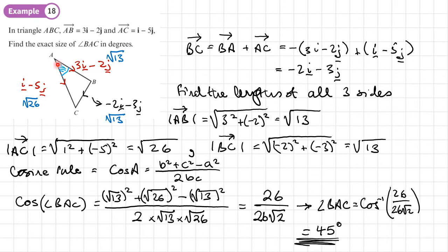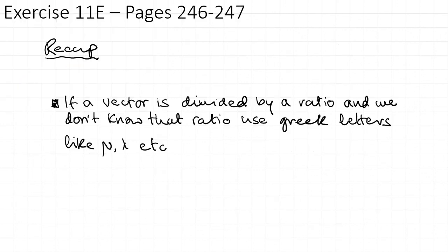Although it doesn't answer the question, we can note the type of triangle. It's an isosceles triangle because AB and BC are both root 13. With angle BAC equal to 45 degrees and the triangle isosceles, this is actually a right-angled isosceles triangle with the right angle at B. You should now be able to do exercise 11e on pages 246 to 247 of the textbook.